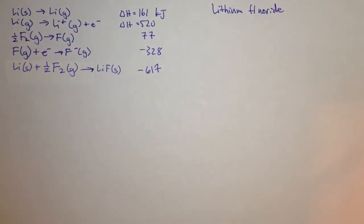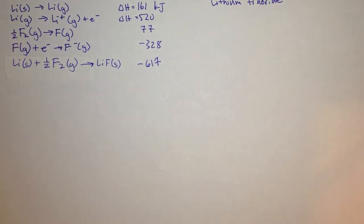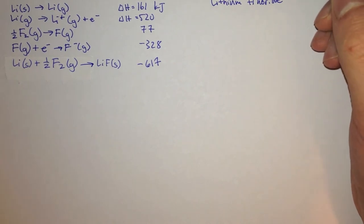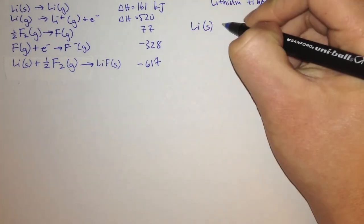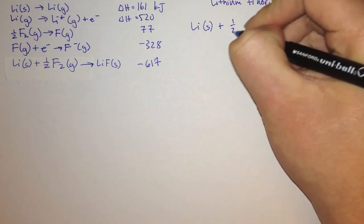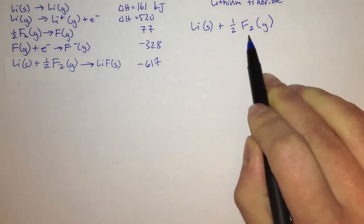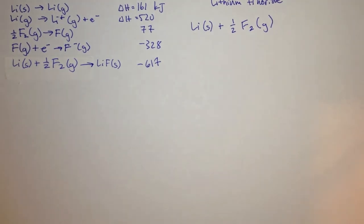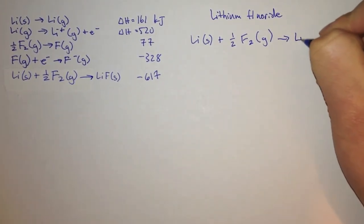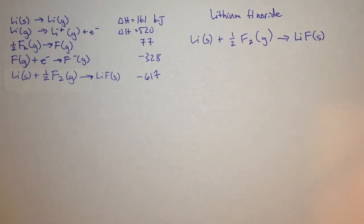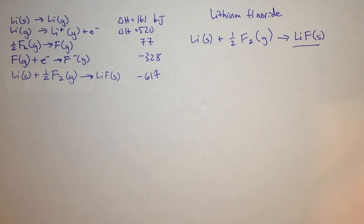Let's take a look at a different problem — the formation of lithium fluoride. Let's write an equation for this reaction. Lithium comes to us at room temperature as a solid, and we add some fluorine gas. It's F2 because fluorine is a diatomic, which means it can bond with itself. We use this to create lithium fluoride as a solid, and again this is an ionic compound with a lattice structure, so we can solve it the same way we solved the previous problem.